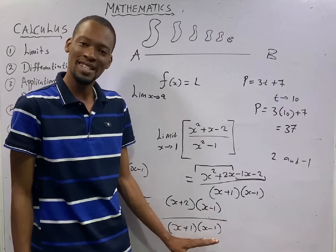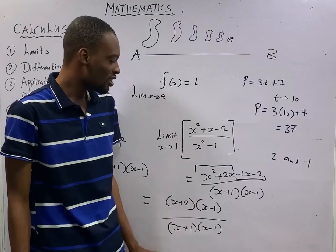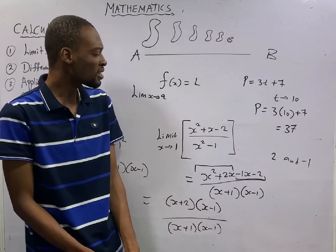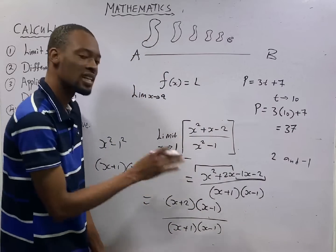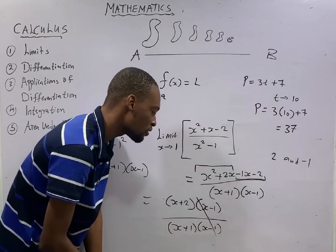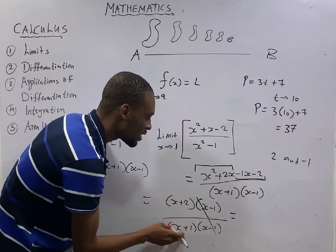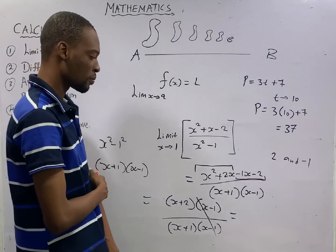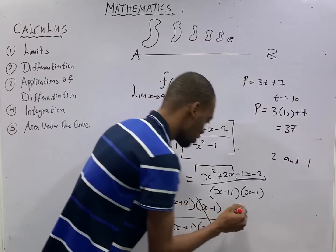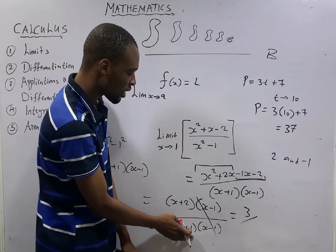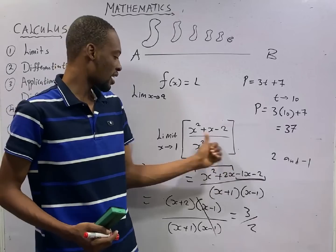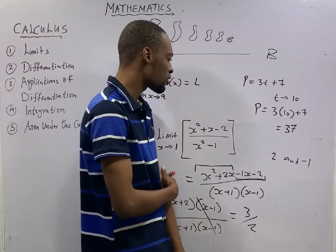If you substitute s = 1 at this stage, you still get 0 over 0. So the smart thing to do is cancel the common factor: (s − 1) appears in both numerator and denominator, so they cancel out. The result becomes (s + 2) over (s + 1), which is now in simplest form. We can substitute the limit: as s tends to 1, we get (1 + 2) over (1 + 1), which is 3 over 2. So 3/2 is the limit of this function as s approaches 1. This is an introduction to limits.